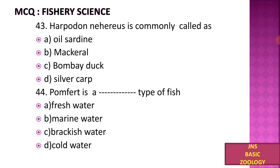Harpodon nehereus is commonly called: A) Oil Sardine, B) Mackerel, C) Bombay Duck, D) Silver Carp. Harpodon is also called Bombay Duck.